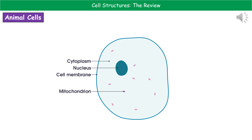We now need to understand the different structures found within the different types of cell. The first one to look at are animal cells, which should be familiar from Key Stage 3. Your animal cell is typically the fried egg shape. You've got the nucleus in the middle, the mitochondria shown as pink blobs, the cytoplasm which is the jelly-like substance, and surrounding that we have the cell membrane. Be really careful not to write down cell wall — for animal cells it's always the cell membrane.